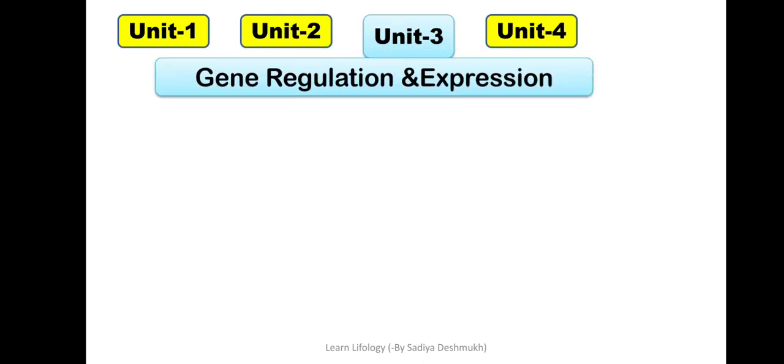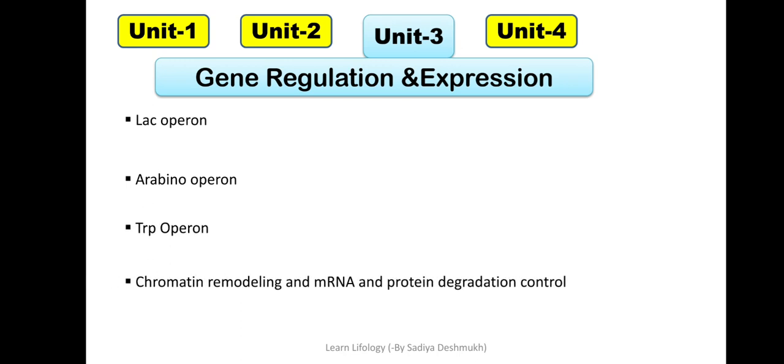Unit 3 is Gene Regulation and Expression. This is very interesting and a small unit. If you understand one concept, you will understand everything. First, we have to see lac operon, which you have already studied in your BSc. Second is arabinose operon, third is trp operon, and last is chromatin remodeling. You have to study these four points, and if you understand lac operon very well, you can write about any operon. In all of them, there is a slight difference in regulation, nothing else.